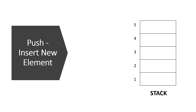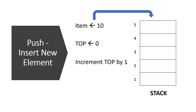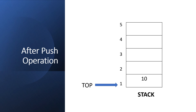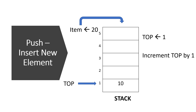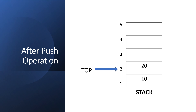Push operation means inserting a new element to the stack. If we have to apply push operation to insert item 10, the steps are very easy: just increment top by one and then assign the new item to the new top index by stack[top] = item. After the push operation, the stack will look like this. If we apply push operation again to insert item 20, the process is the same: increment top by one — it was 1, and after incrementing it will be 2 — then insert the new item at this new top index. After the push operation, the stack will look like this. You can see here top is pointing to index 2, which is the last element.